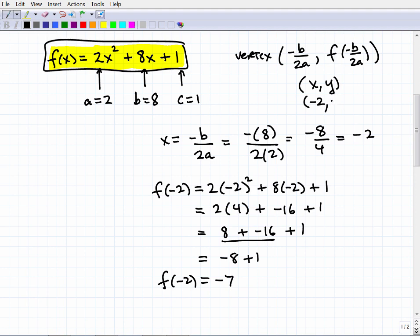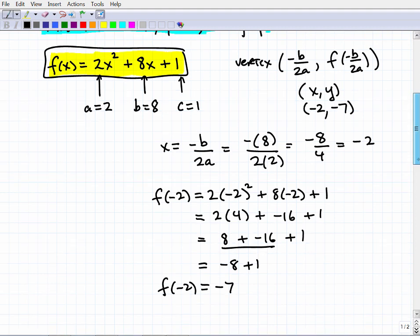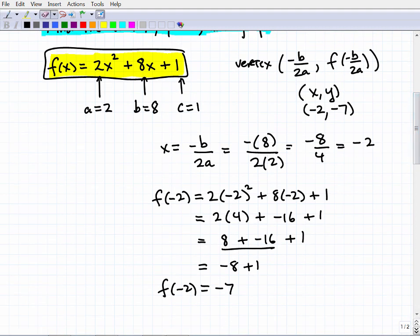So this is easy to figure out, just doing some basic mental math here. So 8 and 16—this gives me a -8 plus 1, and finally I get -7. So f of -2 is equal to -7, and this is our y component, our y value for the coordinate. So here we have (-2, -7) is the vertex.